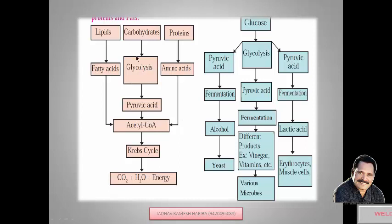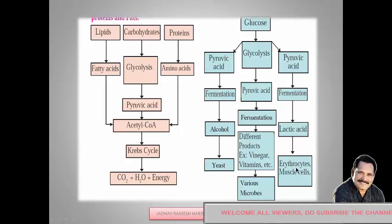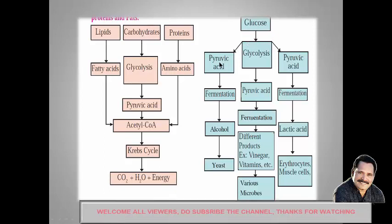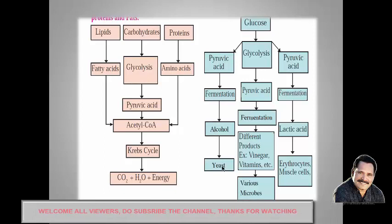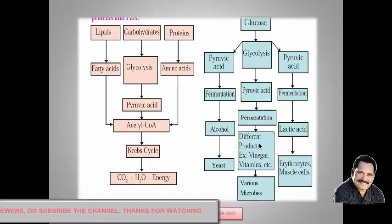This is aerobic respiration that takes place in the body. In anaerobic respiration, it takes place in various microorganisms like yeast, as well as in our erythrocytes (RBCs) and muscle cells. In this process, glucose goes through glycolysis — which is the same in both aerobic and anaerobic respiration — and after glycolysis, the pyruvic acid gets fermented and converted into alcohol by yeast cells, producing two molecules of ATP.